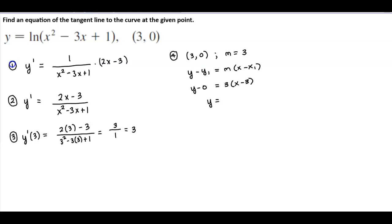So we have y over here and distribute the 3, we get 3x minus 9. And therefore, this is the equation that is the tangent line to the curve at that given point.